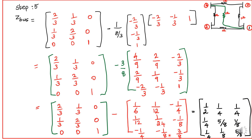Finish the remaining elements in the same way, then subtract. Z(1,1): 2/3 minus 1/6 — taking LCM as 6 gives 4/6 minus 1/6 = 3/6 = 1/2. Z(1,2): 1/3 minus 1/12 — multiply both by 4 gives 4/12 minus 1/12 = 3/12 = 1/4. Z(1,3): 0 minus minus 1/4 = plus 1/4. Finish remaining elements similarly. This is the final Z-bus matrix, a 3x3 matrix.